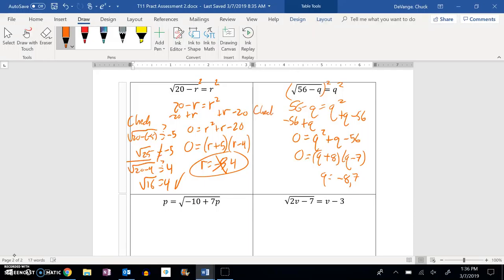Plug in negative 8. Square root of 56 minus negative 8. Does that equal negative 8? So I know it doesn't. 56 minus negative 8 is 64. But the square root of 64 does not equal negative 8. It equals positive 8. So I'm going to throw that one out.